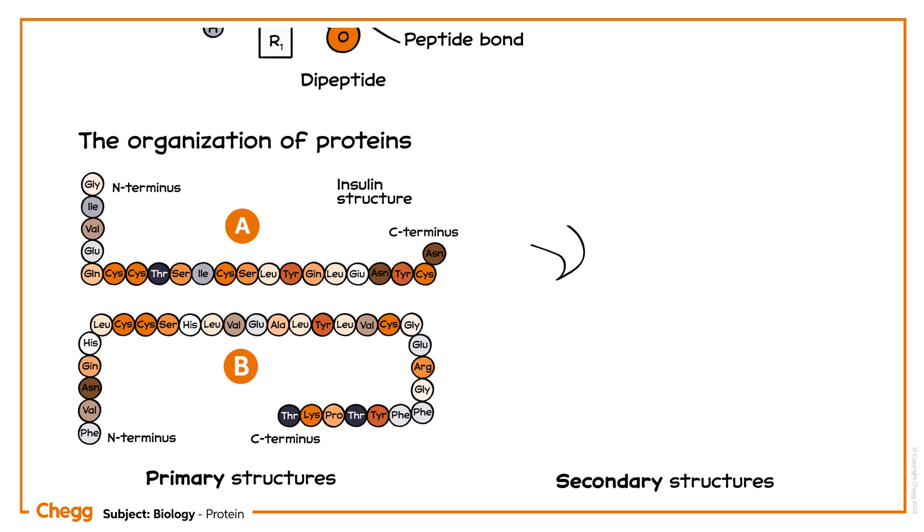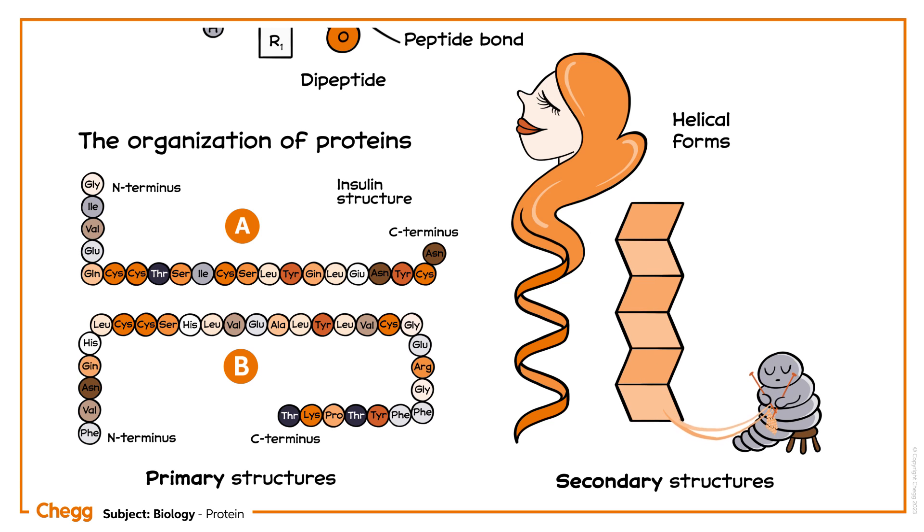Then, the secondary structure is determined by the pattern of hydrogen bonding. This results in helical forms that are seen in alpha strands of keratin present in the hair, or beta-pleated sheets seen in the structure of silk protein, which is more complex than the primary structure.